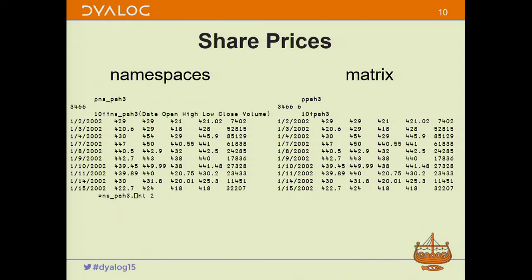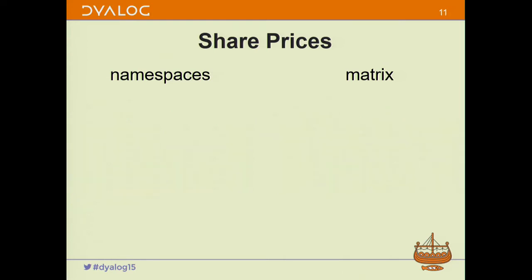In the namespace case each namespace contains the same set of variables, but in the matrix case we have no such names — just the rectangular array of data. If we attempt to create a data source from each, the 2015 I-beam is what we use to create a data source. It returns a .NET object that implements all of these interfaces, and that object is what we pass over to the GUI.